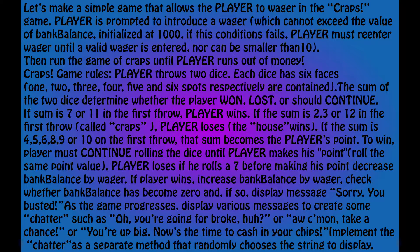If the sum is 4, 5, 6, 8, 9, or 10 on the first throw, that sum becomes the player's point. To win, the player must continue rolling the dice until the player makes his point — rolling the same point value. The player loses if he rolls a 7 before making his point, and the bank balance decreases by the wager.